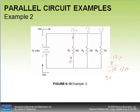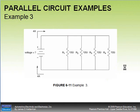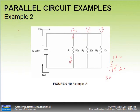For the second branch, we change the resistance value. With a 2-ohm resistor: 12 divided by 2 gives 6 amps flowing in that branch.